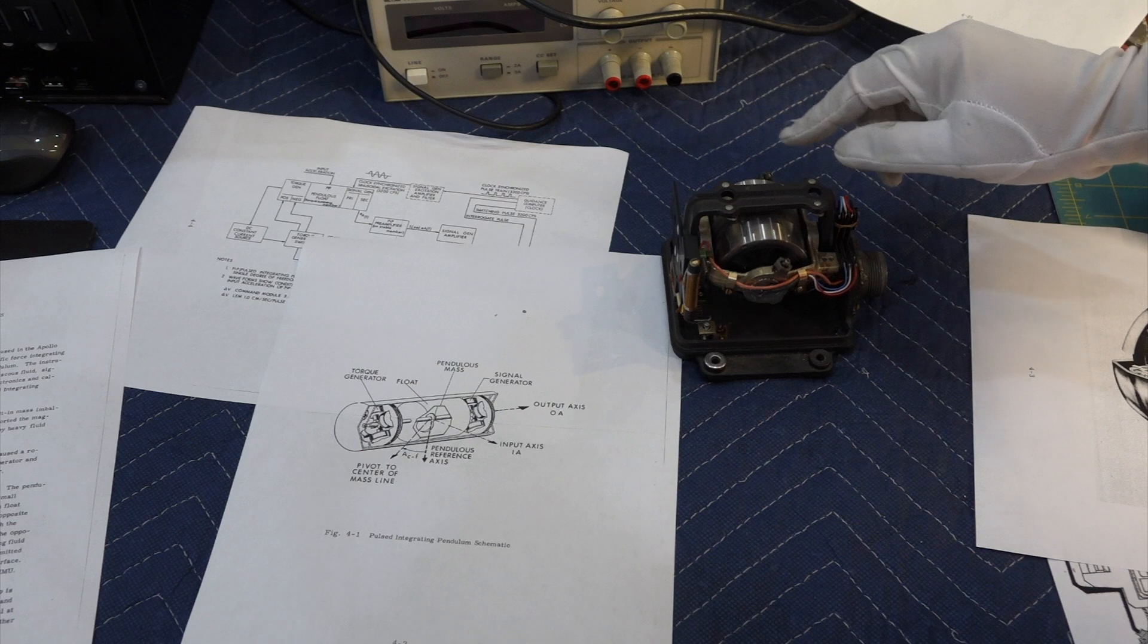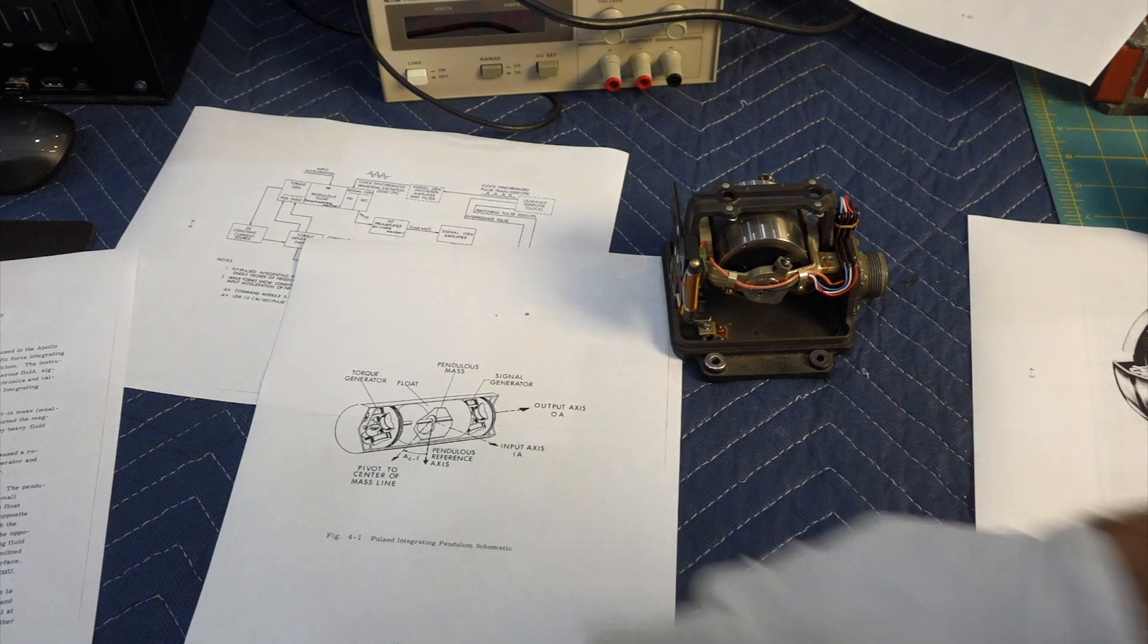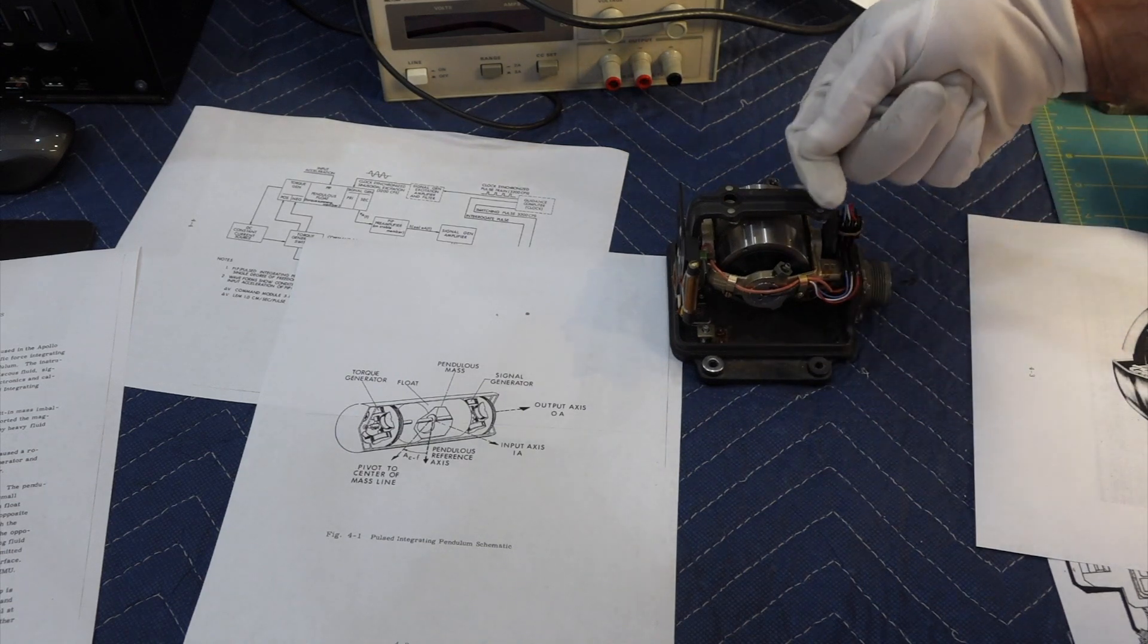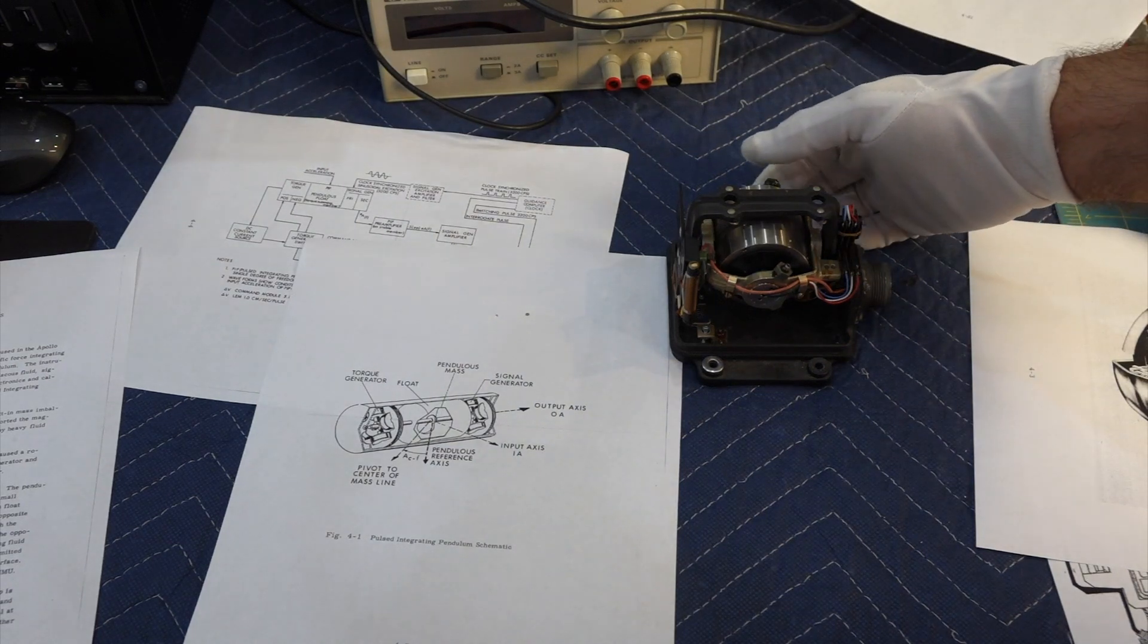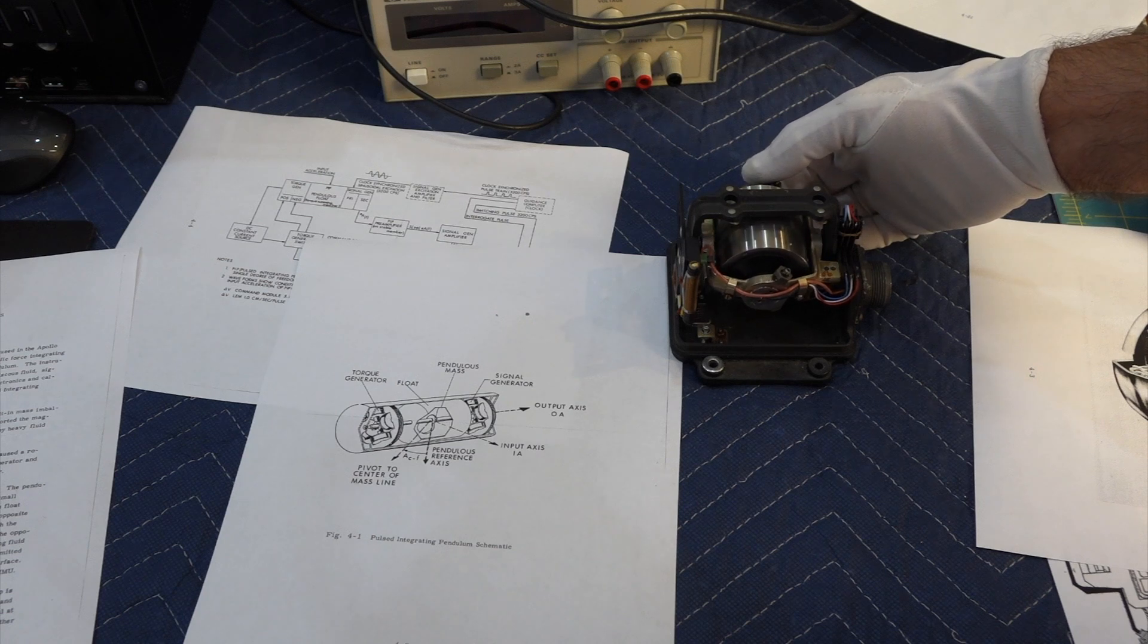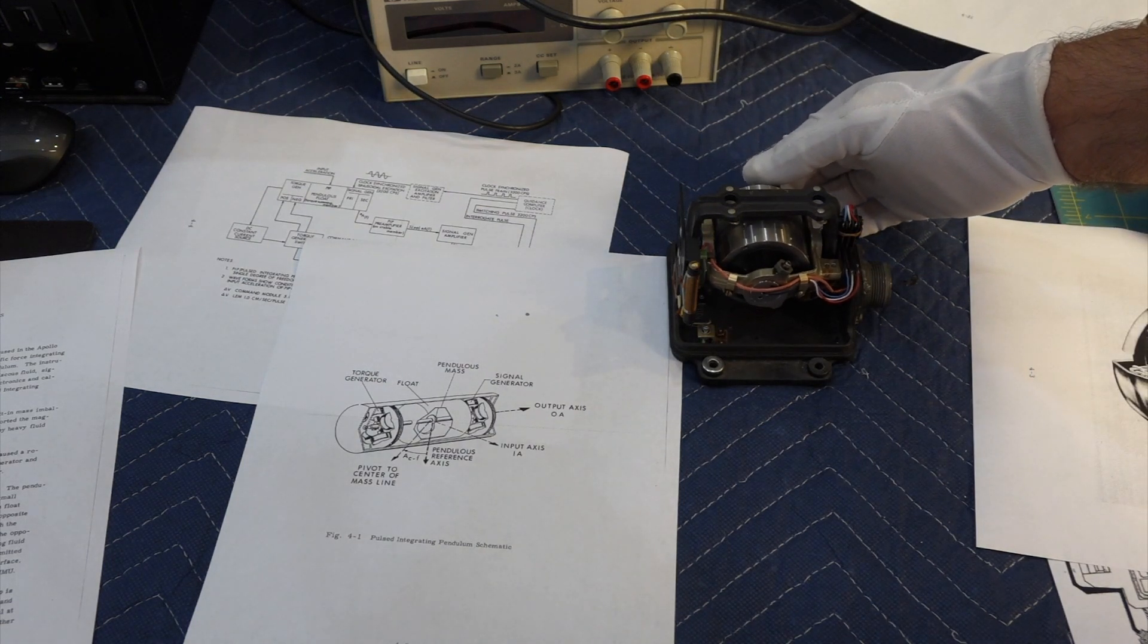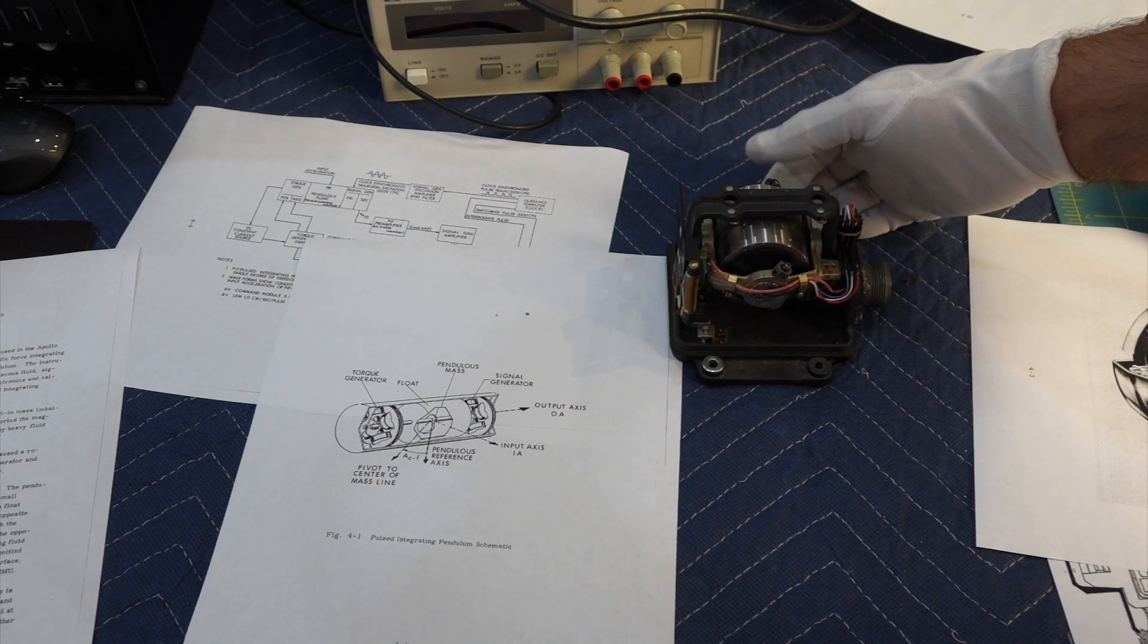And what happens is that, since this is a pendulum, it's unbalanced. When there is some acceleration along the sensing axis, which would be this way, input axis, it takes more pulses to balance it in one way than the other. And so they count the number of pulses in excess of the pulses that they need at rest, which is three pulses one way, three pulses the other way, and figure out the acceleration.